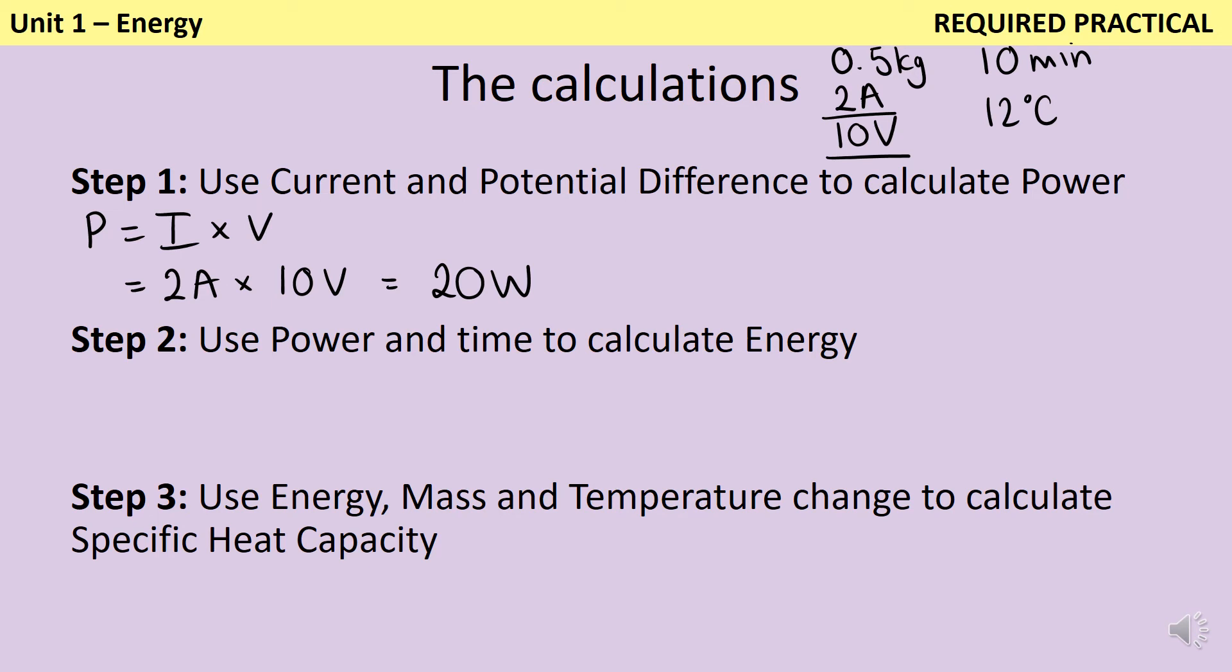Now I can use energy is power times time, in order to work out how much energy was transferred in total, because it's no good knowing that 20 joules are transferred every second if my heat was on for more than one second. So I've just worked out the power, 20 watts. And then my time needs to be in seconds. So I'm going to take that 10 minutes and multiply it by 60 to make it 600 seconds. That gives me a total energy transfer of 12,000 joules.